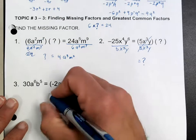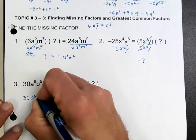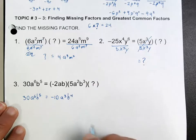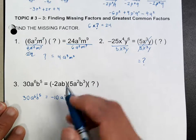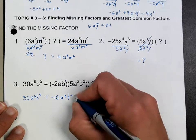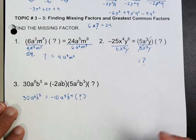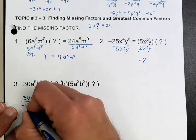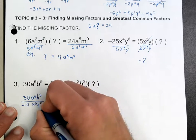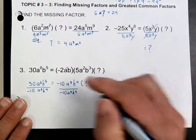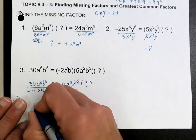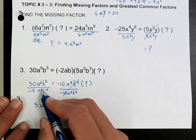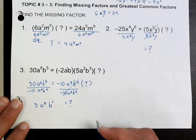Now if you have something like this, what I recommend is to multiply first, so you have negative 10a cubed b to the fourth — I just multiply those two things together. Remember when you multiply, you add the exponents; this is a to the first, b to the first. And that quantity times what is equal to 30? Now I have the same exact problem. If I divide both sides by this, the missing factor is going to be 3a cubed b to the first.